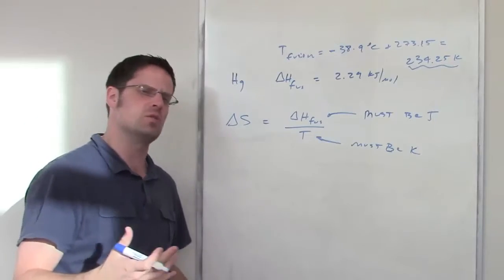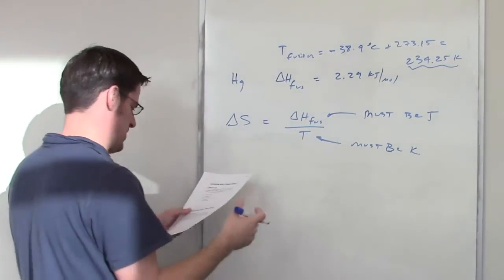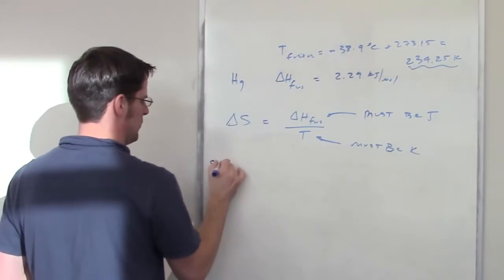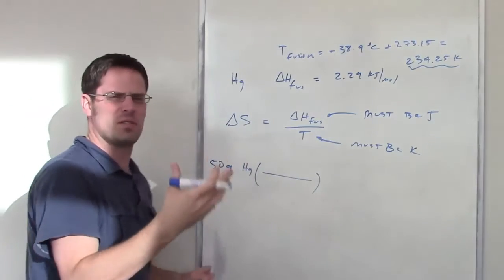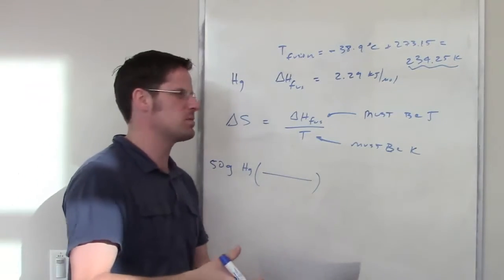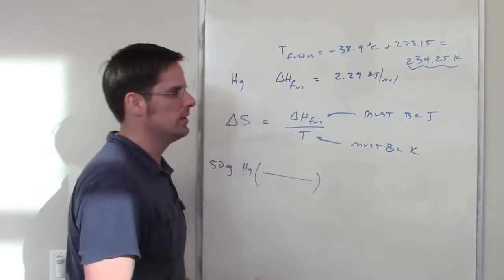But what about this delta H fusion? That once again has to be in joules, so I'm going to have to use some stuff to manipulate things. The problem tells me I've got 50 grams of mercury. Can I somehow use information that I have or can extract from somewhere to convert grams of mercury for the system into joules?